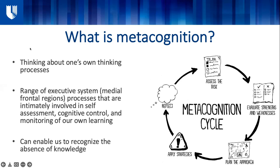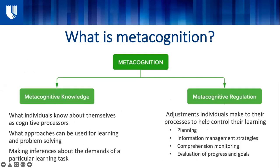Historically, metacognition has been broken down into two sub-processes. There are decades of literature on this topic, but essentially metacognition is broken down into metacognitive knowledge — that's the knowledge you have about your own learning processes, the strategies you can use to improve your own metacognition, how you assess a task, and how you approach that task. You have to have the knowledge of these skills to develop these skills.